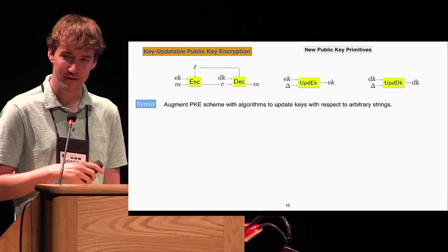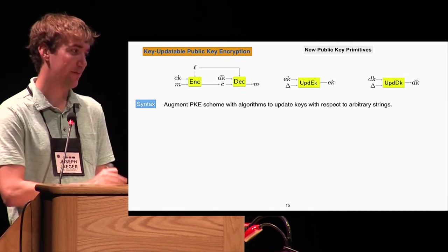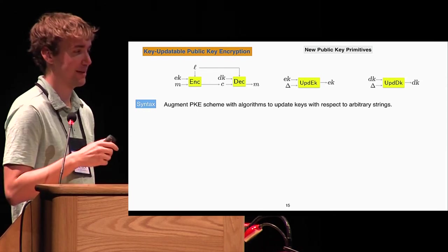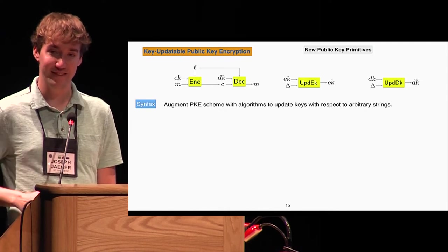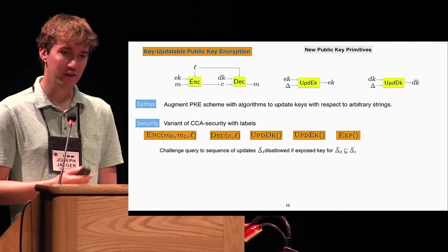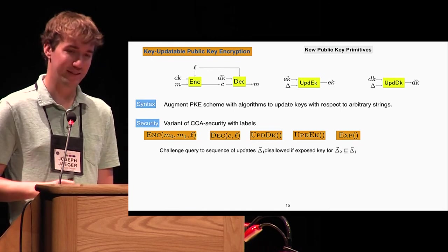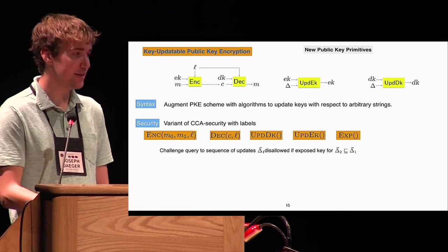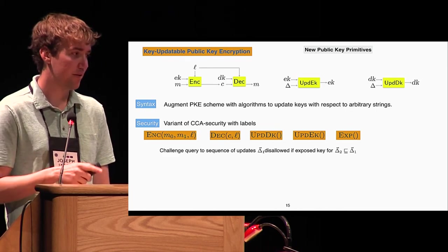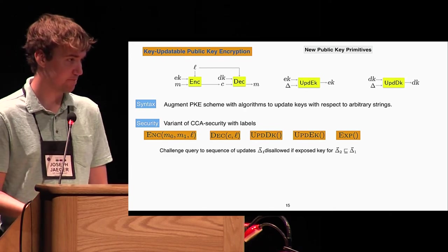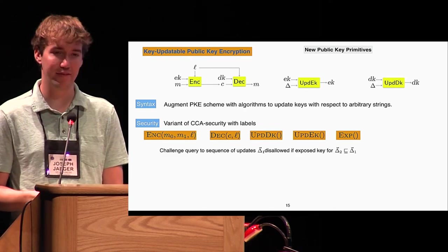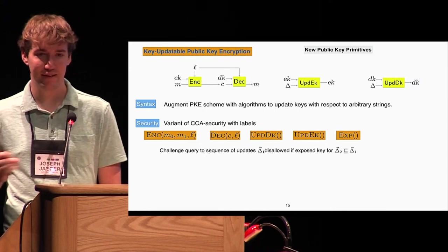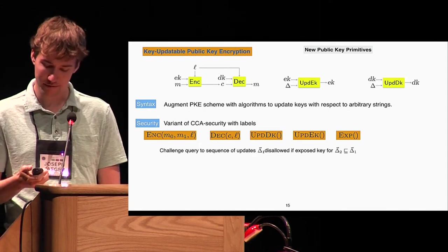Next, our public key encryption. Again, we take normal public key encryption, this time public key encryption with labels, and we add algorithms for updating the encryption and decryption key with respect to delta. This works kind of in the same way. For security, our definition was a variant of CCA security where we add two oracles for updating the keys with respect to an attacker-chosen delta, and an oracle which gives back the current decryption key. Again, we have the same sort of trivial restriction that you can't do the obvious attacks by exposing a decryption key and then using that to decrypt a challenge ciphertext.